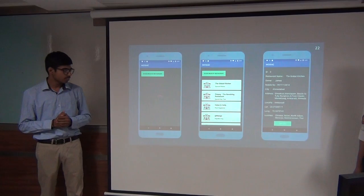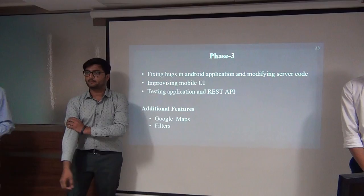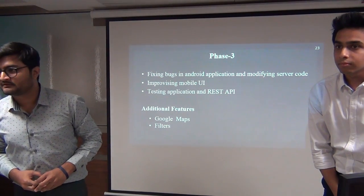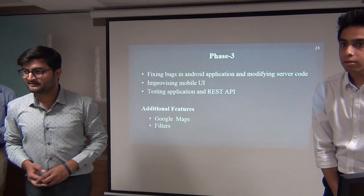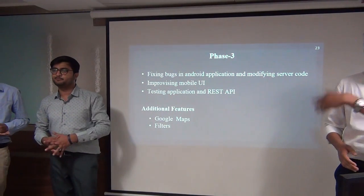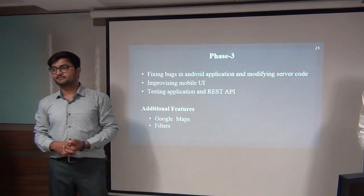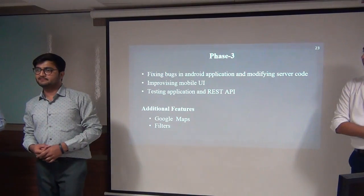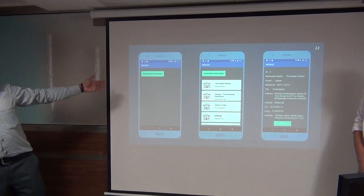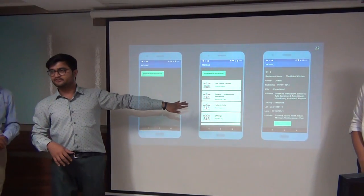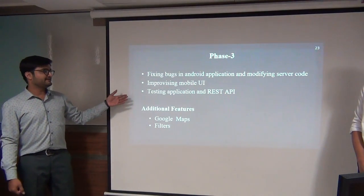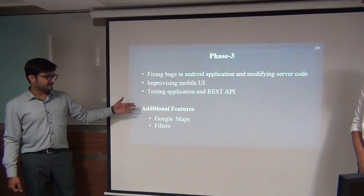The UI was being improved in phase three. We fixed bugs in the Android application and modified some server code. We also received a question about whether the app retrieves weather details. We noted that could be implemented in the future using a Google weather API, as distance may affect travel conditions. In phase three, additional features included Google Maps integration and feed filters.